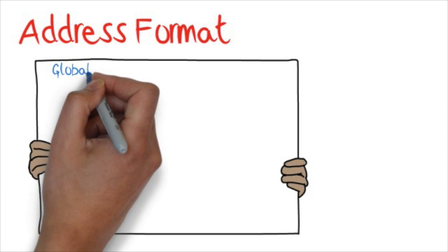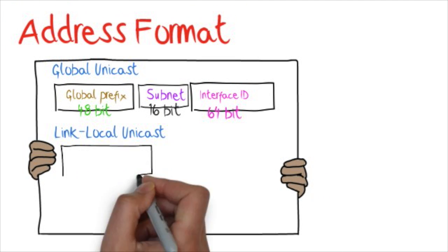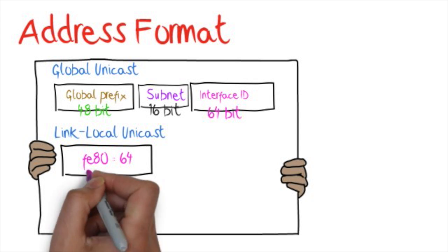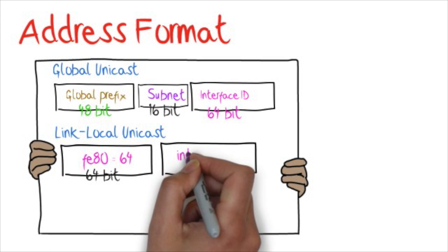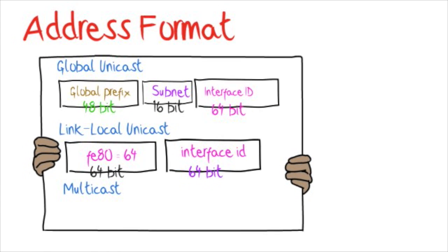First, global unicast. It has a global prefix of 48-bit, subnet of 16-bit, and interface ID of 64-bit. Next, link local unicast. This address starts with FE80, 64-bit and 64-bit interface ID.